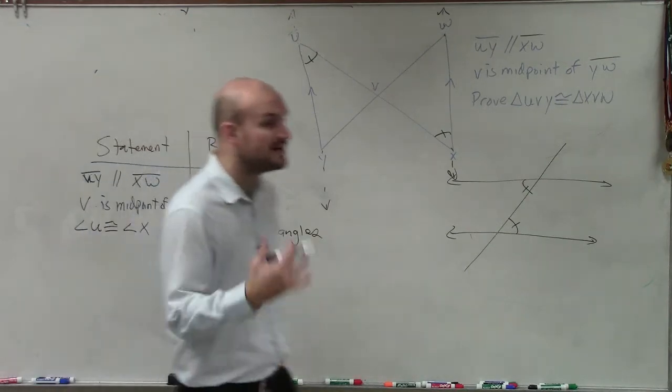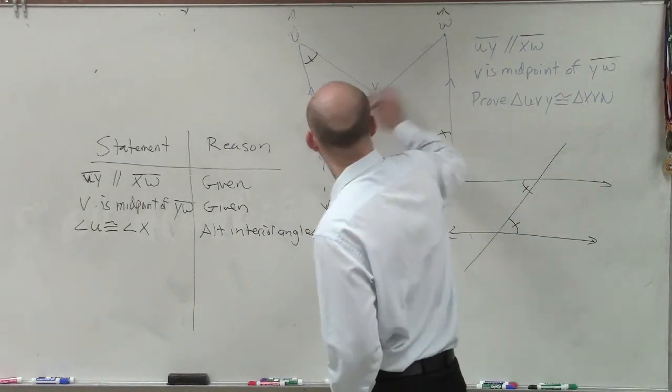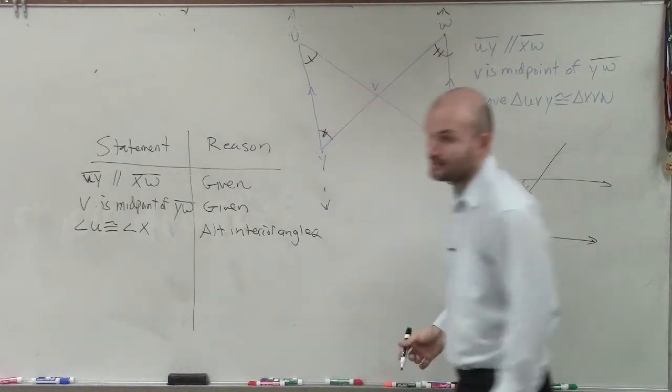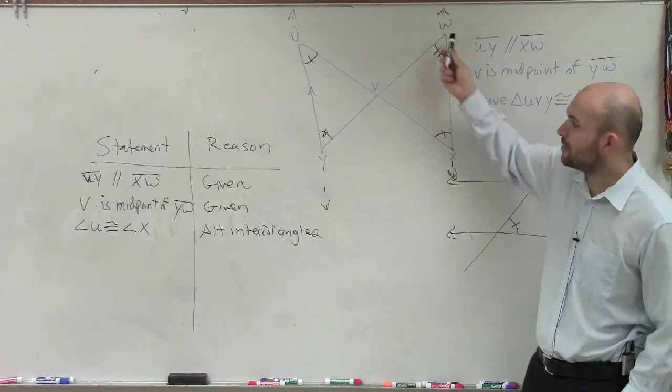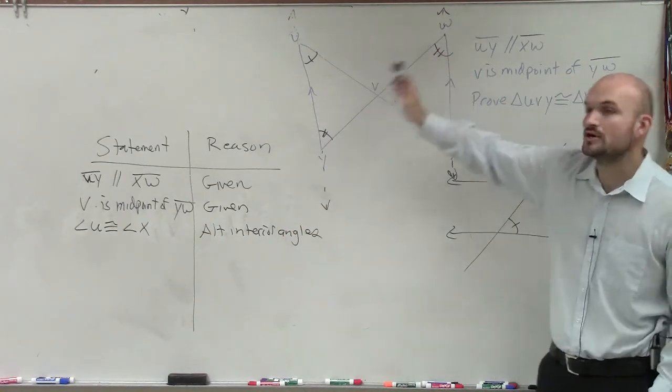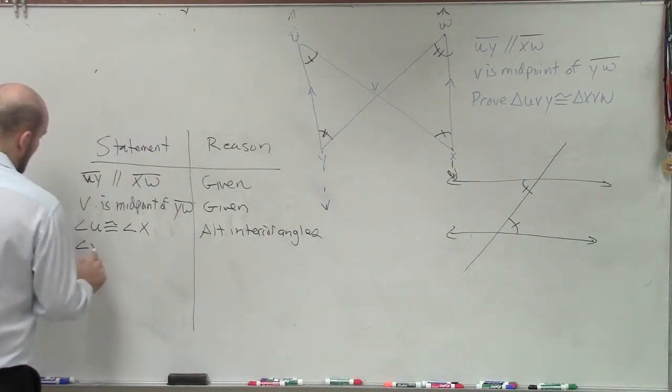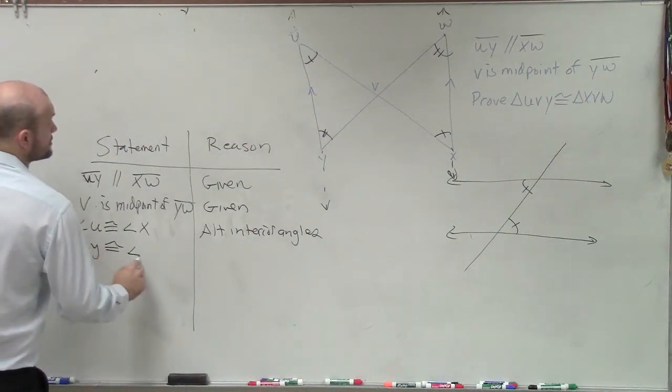All right, by using the same thinking, I can say that this angle is congruent to that angle. Because these two angles are both on this transversal which intersects the parallel lines, so these are also alternate interior angles. So now I can say angle Y is congruent to angle W.